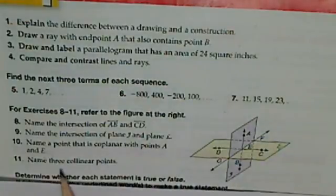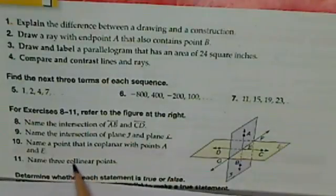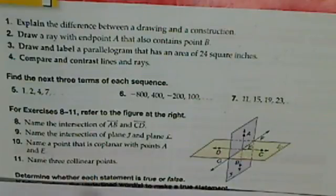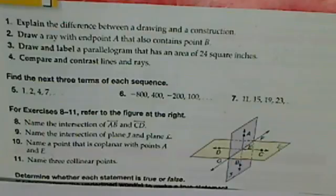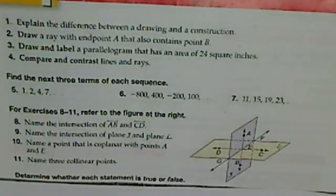Skip down to 11. Name three collinear points. Collinear, that would mean on the same line. Collinear. So D, E, and C would be collinear. A, E, and B would also be collinear.